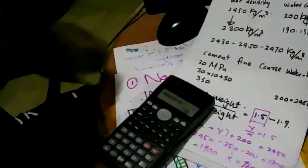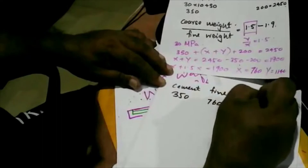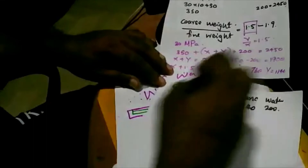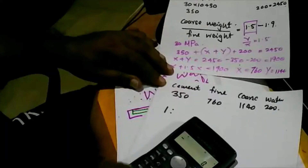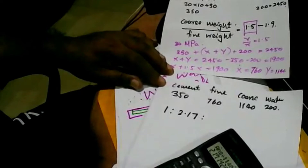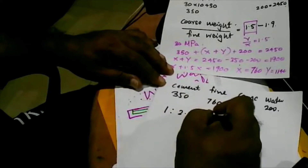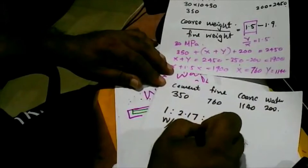So for weigh batching we have: cement 350 kg, fine 760 kg, coarse 1140 kg, water 200 kg. The mix ratio is 1 : 2.17 : 3.25, and the water-cement ratio is 200 divided by 350, which is 0.57.